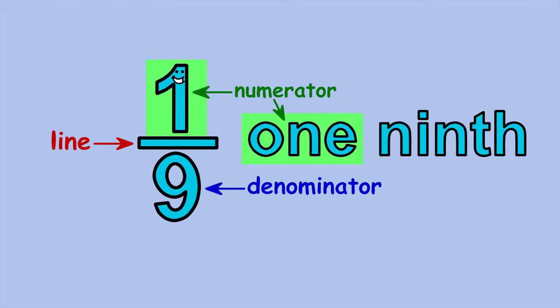The first part of my name is just the name of the number, that's my numerator, one. And the last part of my name comes from my denominator. When the number nine is written below the line, you say ninth instead of nine. So I'm one-ninth.